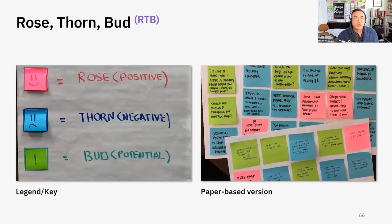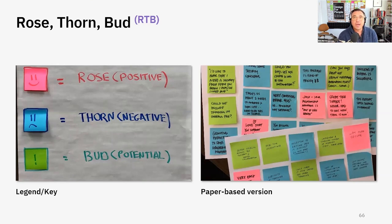We're actually going to make observations using the metaphor of a rose. Rose Thorn Bud got its start from the Boy Scouts of America, in which the boys, when they would go out in the wilderness, were asked to make observations using the metaphor Rose Thorn Bud.